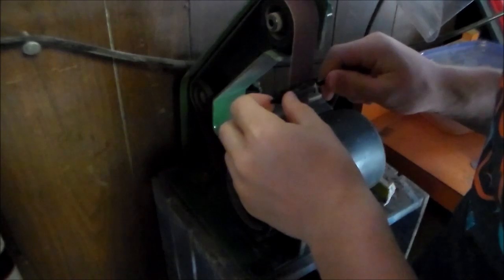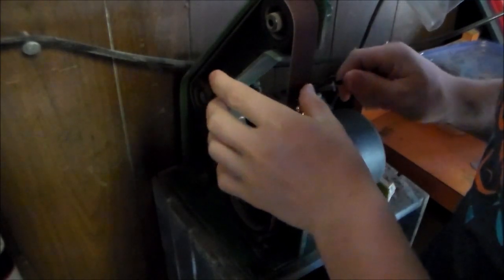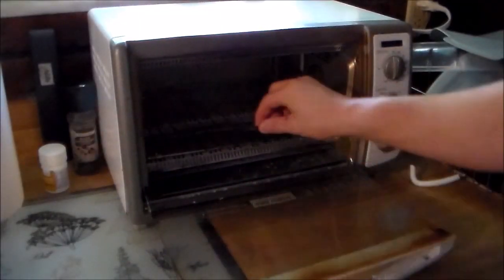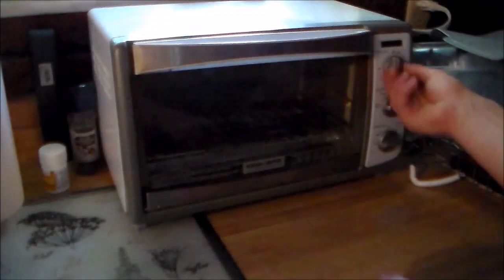And before I temper it, I like to grind off some of the scale so I can see the color of the metal. And I put this blade in the toaster oven at 400 degrees for two hours.